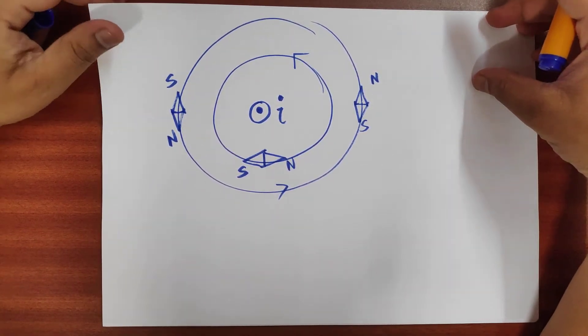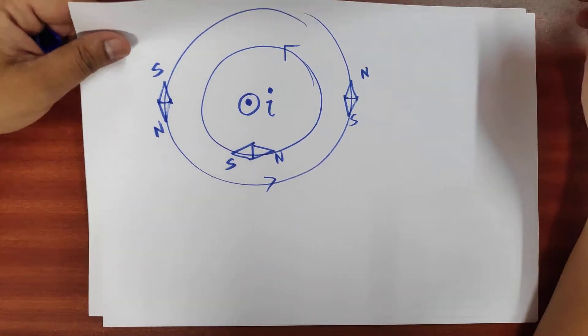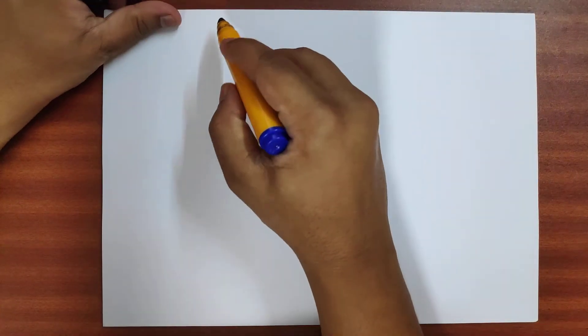Now there is a law — Biot-Savart's law — by which we can calculate the magnetic field due to a current carrying wire.